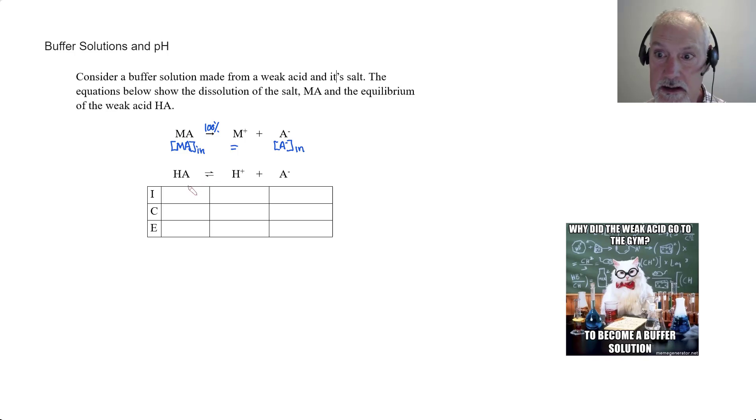Now let's consider our weak acid. We have some initial concentration of weak acid, we'll assume there's no hydrogen ions in excess, and the concentration of our anion we've got from our salt. Now this will dissociate a certain percent, causing the hydrogen ion to go up and the concentration of our anion to go up.